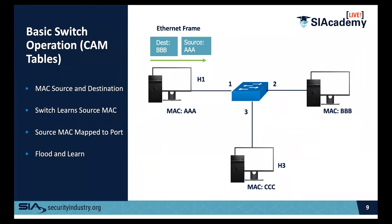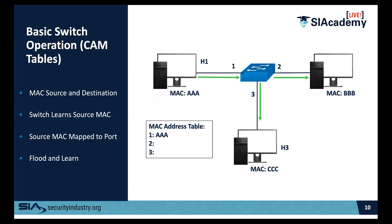H1's source MAC address is AAA. While the switch doesn't know where destination MAC BBB is, when that packet goes out it floods to all ports. In the process, it records its own MAC address in the table. As each device starts sending traffic, the MAC address table gets built up, and once all MAC addresses are learned, it no longer operates in a flood environment.